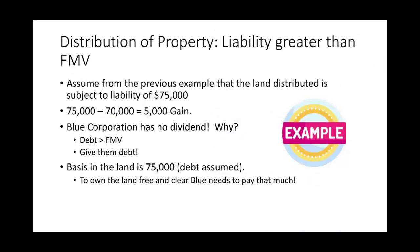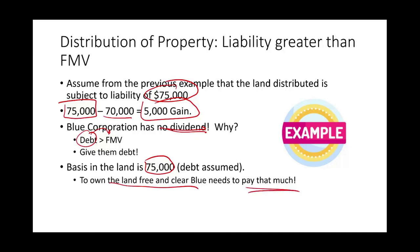Now assume the land is subject to a liability of $75,000. Since the liability exceeds the fair market value of $40,000 and the basis, the liability becomes the fair market value — so there is actually a gain of $5,000 ($75,000 minus $70,000 basis). Blue Corporation has no dividend in this case because the debt is greater than the fair market value. Effectively, all that was given to Blue was debt — they owe $75,000 to the bank, so their basis in the land is $75,000.